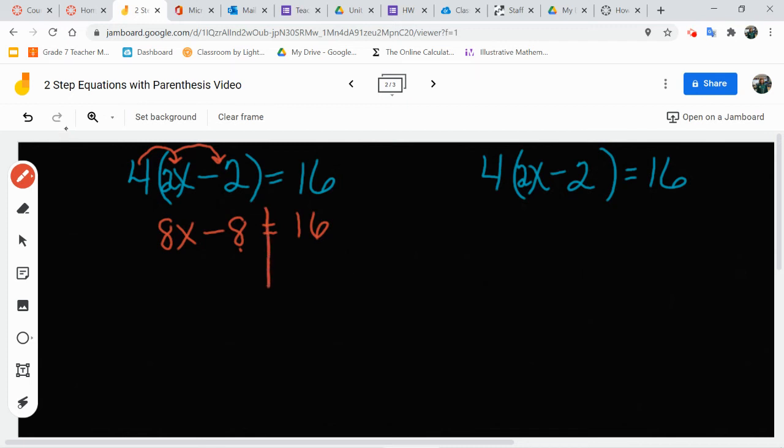Then we're going to solve it just like we did with the two-step equations. The first step is always the opposite of adding or subtracting. The opposite of minus 8 is to add 8 to both sides. Remember, this is a number plus its opposite, which gives us 0 or none, leaving us with 8 times x equals 16 plus 8 is 24.